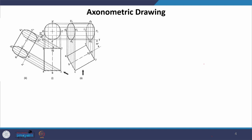Let us look at a slightly more complicated case: a cylinder with its axis parallel to HP and inclined to VP. I will again start by drawing the plan. The axis is at 45 degrees each. Since the angle is 30 degrees, I will draw a reference rectangle and then take it into axonometric. This rectangle is what contains our inclined cylinder's plan, where the angle becomes approximately 75 degrees (30 plus 45).